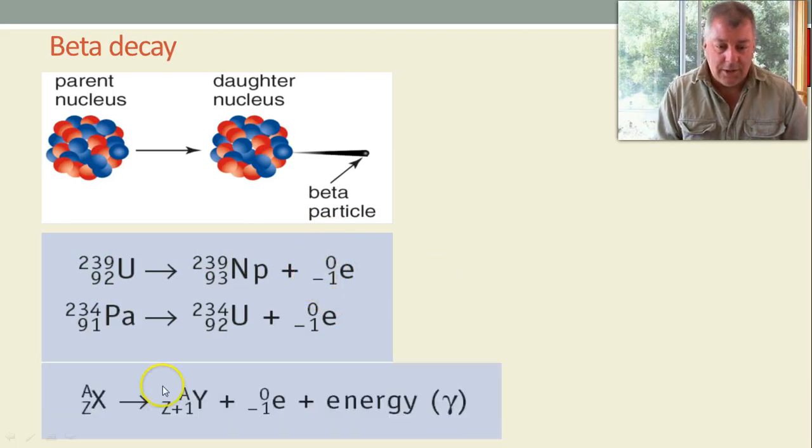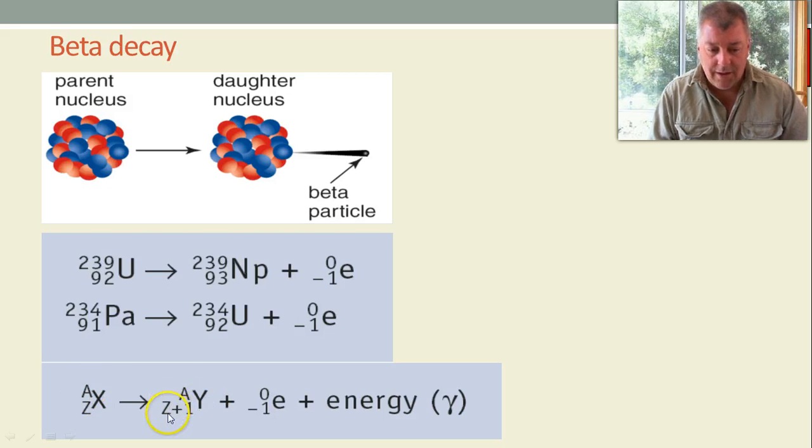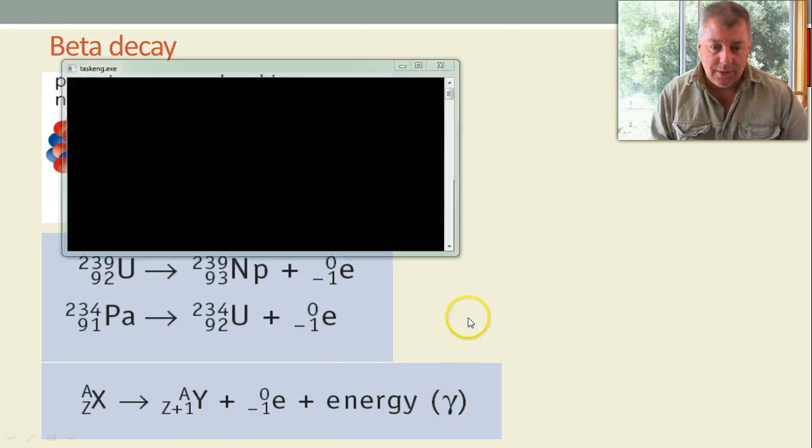Now if we've just looked at a general one, this is a general equation where we have Z is the atomic number, A is the mass number, so the daughter isotope will always have Z plus 1. And although it's not shown here, again, energy is given off. You can either just write energy, or you can put a little photon symbol, a gamma particle there as well.